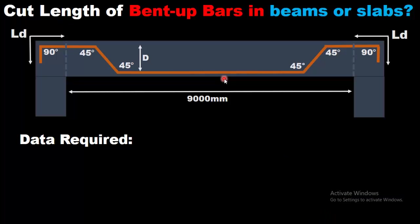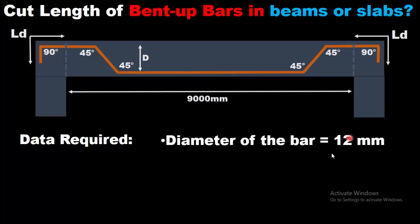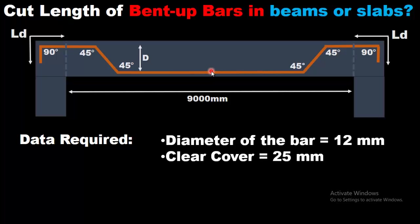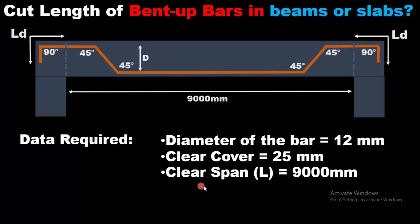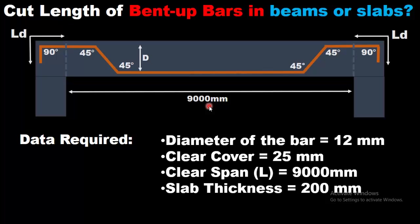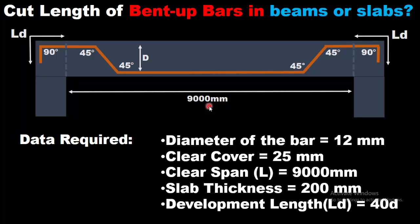The data required to calculate the cut length of a crank bar or bent up bar is: first, you need to know the diameter of the bar — here it is 12 millimeters. Second, you need to know the clear cover, which is generally taken as 25 millimeters, also called concrete cover. Third, the clear span, which is 9000 millimeters. The thickness of slab is 200 millimeters. And the most important thing is development length, also called anchorage length, which is 40 times d, where small d is the diameter of the bar, which is 12 millimeters.